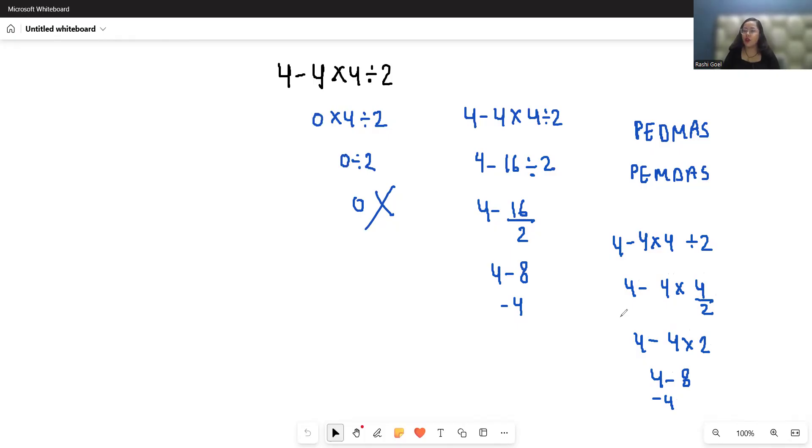So in case of multiplication and division, you have to solve it from left to right. You can give priority to multiplication or division, you will always get the same answer, that is -4. I hope it's clear and you find it useful.